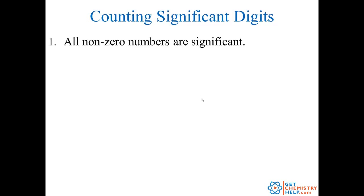Well how about then for non-measurements? Maybe you're just given a number and want to figure out how many of those digits are actually significant. The first rule says that all non-zero numbers are significant. So for example 843 — all of these numbers are significant, giving us one, two, three: this one has three significant digits.